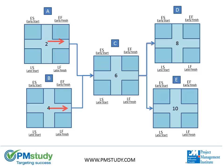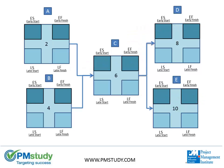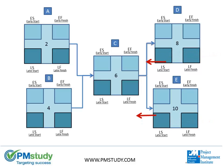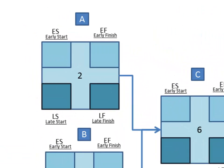The first step in the Critical Path Method is a process called the forward pass. We'll calculate the earliest time a task can begin and the earliest time it can end. After the forward pass, we'll end with the backward pass, which is essentially going from the end of the project back to the beginning to calculate the latest time a task can start and finish without incurring a delay in our project schedule. Okay, are you ready to begin? Here we go.